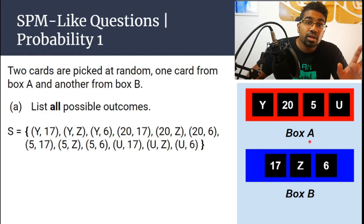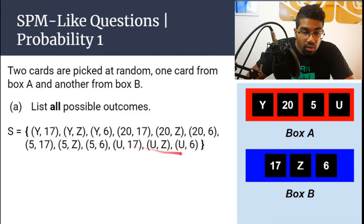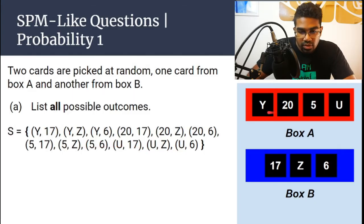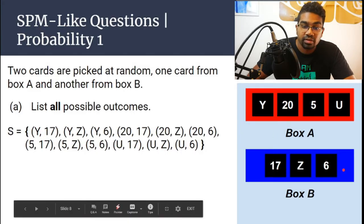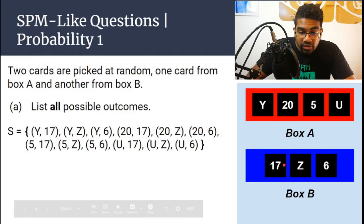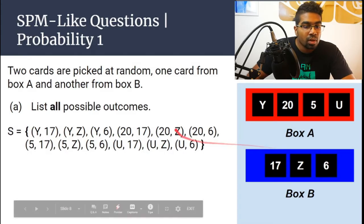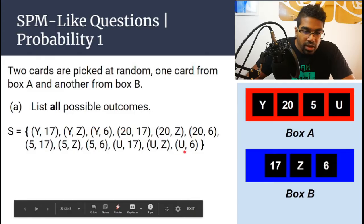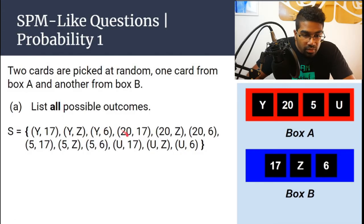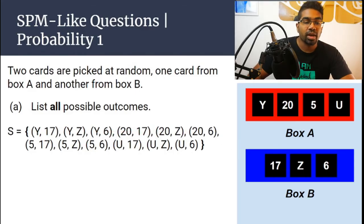If you want to check how many outcomes you're supposed to get altogether, multiply the number of choices in the first instance by the number of choices in the second instance. There are 4 cards in box A and 3 cards in box B, so 4 times 3 gives a total of 12 outcomes. Counting through the sample space confirms we have 12 outcomes.